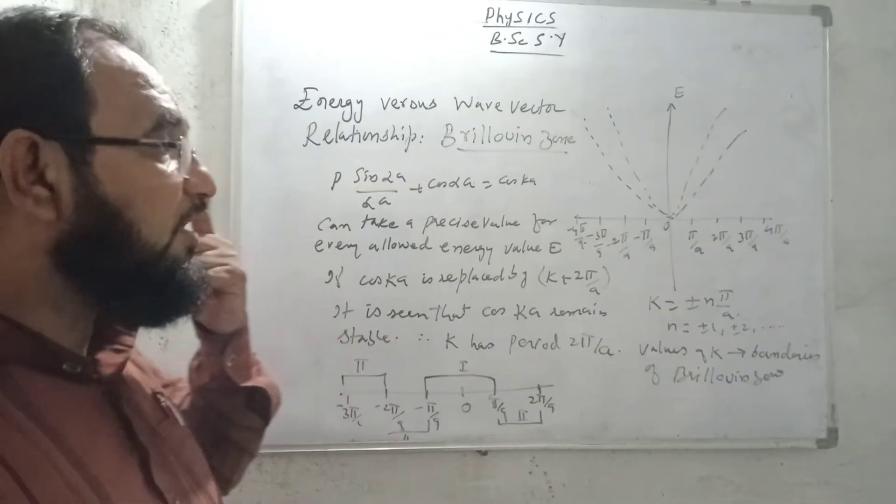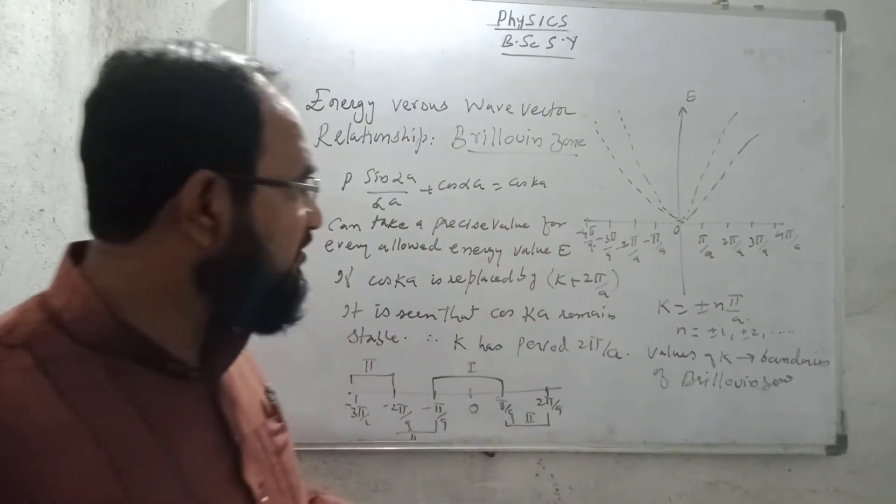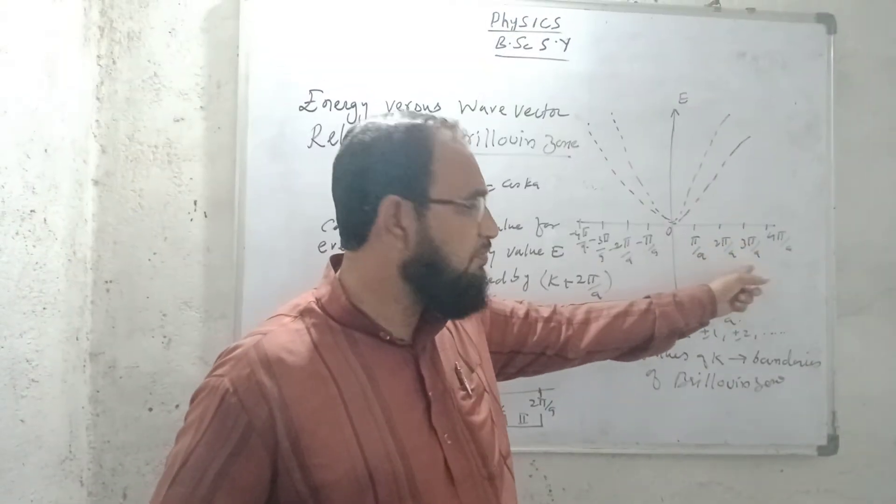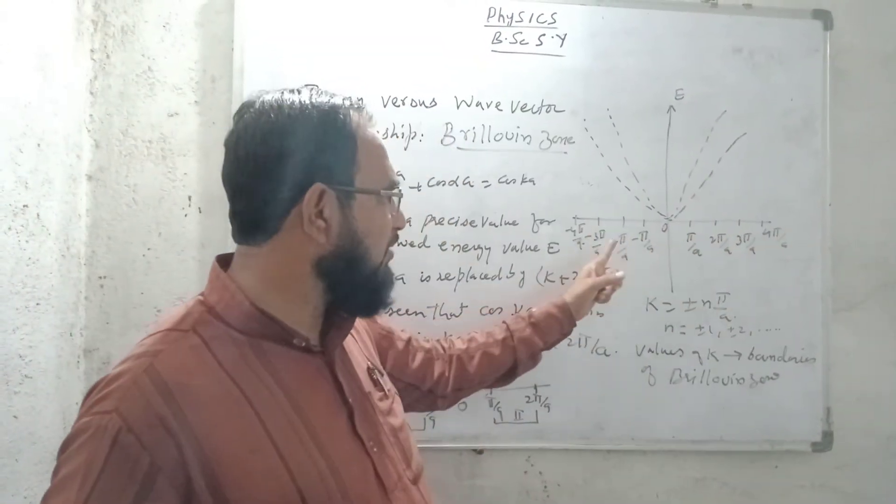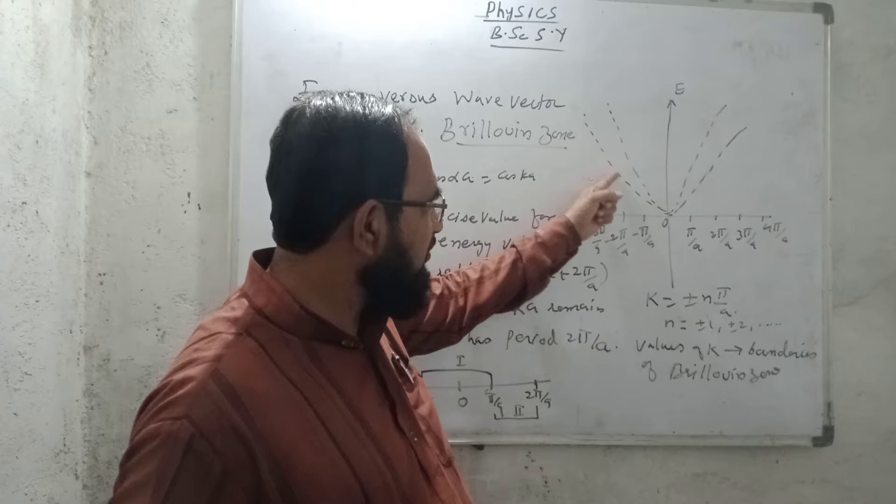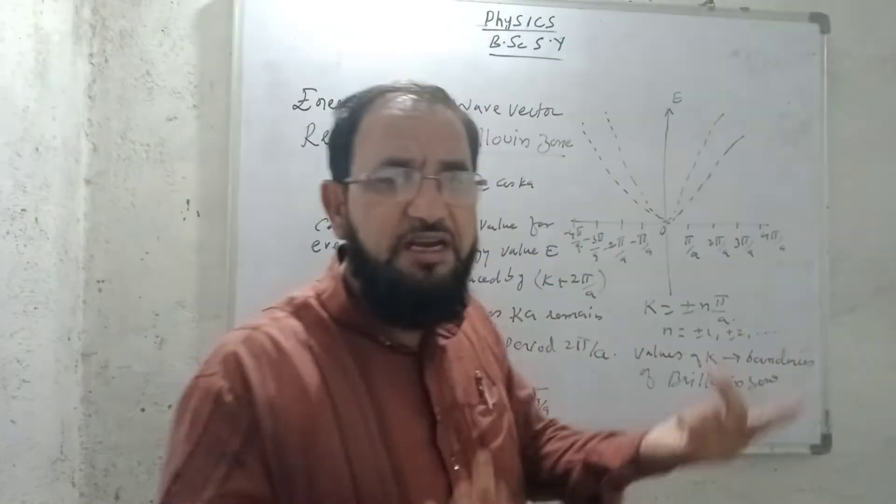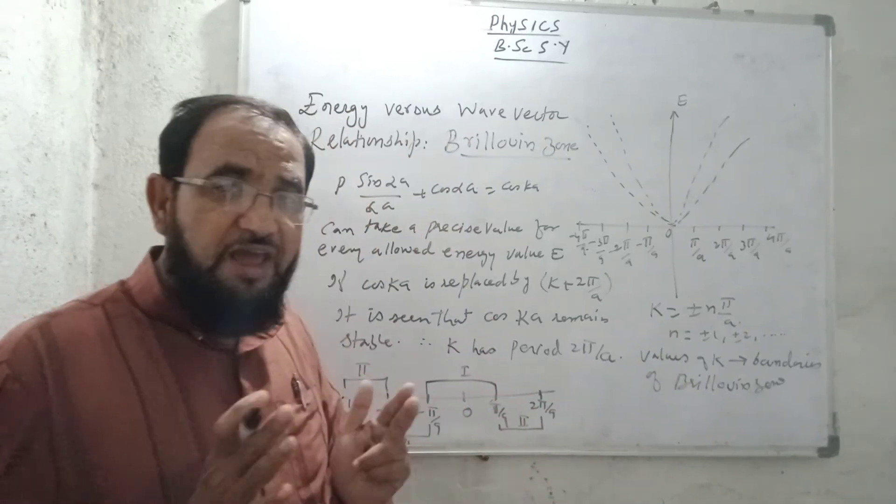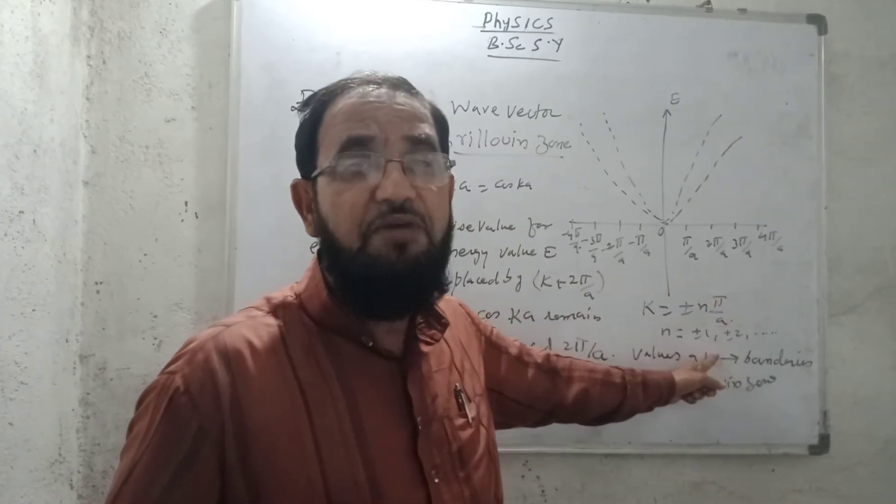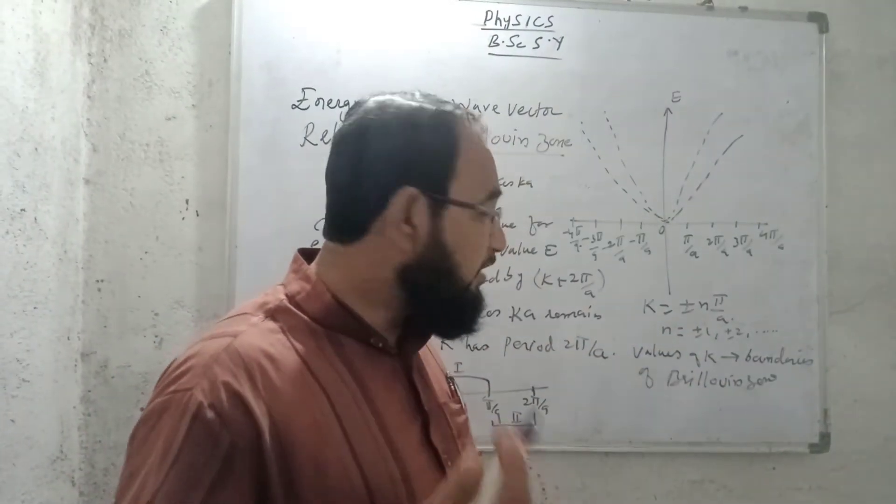So if I plot a graph of energy versus the period as a function of 0, π/A, interval of π/A, 2π/A, 3π/A, 4π, similarly minus π/A minus. So we can see that the energy will go on decreases when we come to the origin and again it will increase. On both the sides, it will increase. It means that the value of K can take the value plus minus Nπ/A, where the value of N may be plus 1, plus minus 1, plus minus 2 and so on.